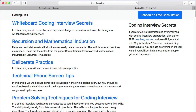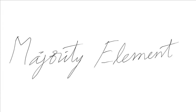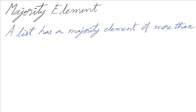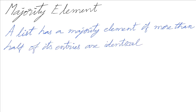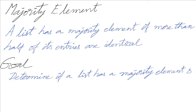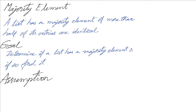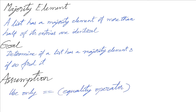This video is sponsored by CodingSkill.net. Let's work through the majority element problem. A list has a majority element if more than half of its entries are identical. Our goal is to determine if a list has a majority element and if so, find it. We will make an assumption that we can use only the equals-equals equality operator.